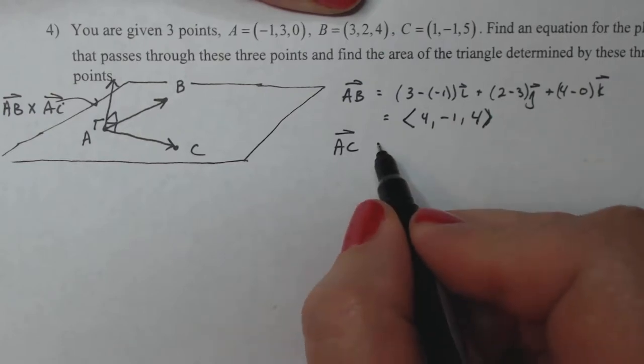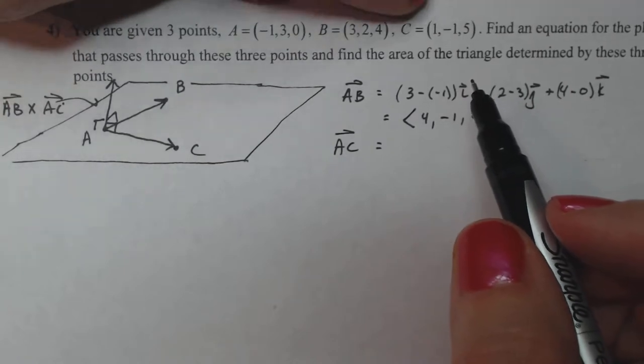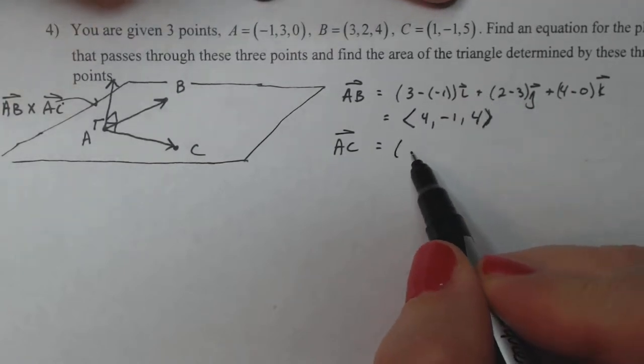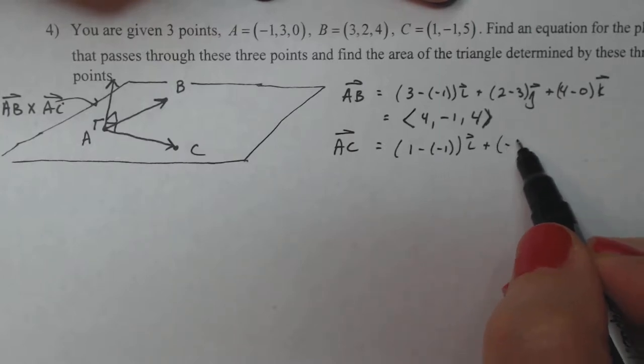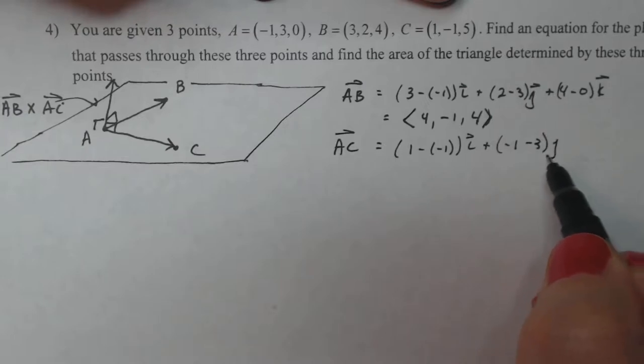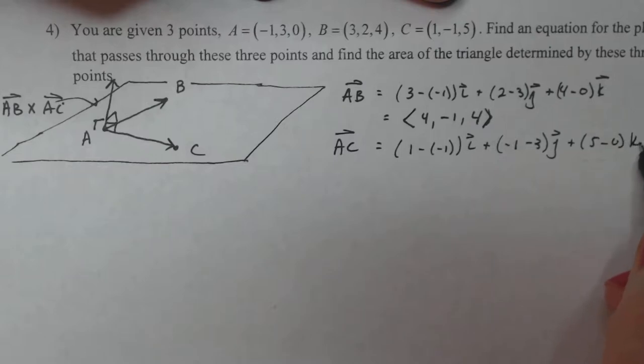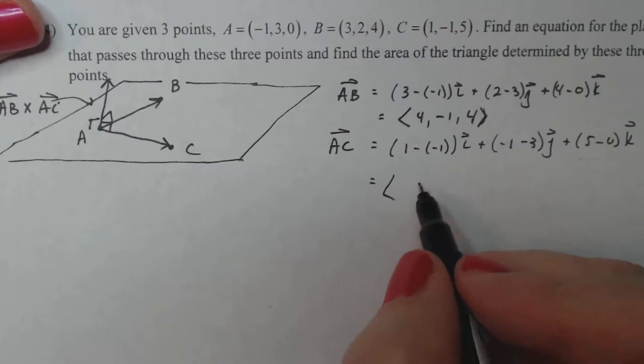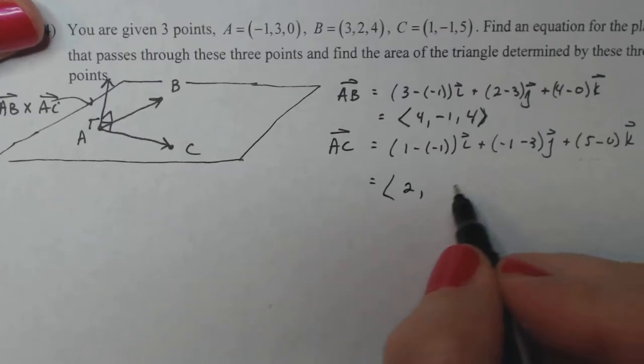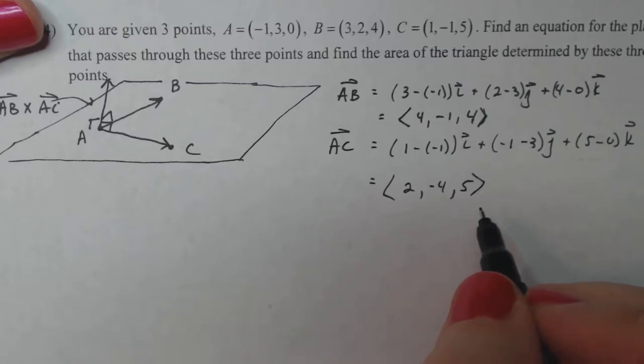Then for AC, C is the two points, so that goes first. So it's gonna be 1 minus negative 1 i plus negative 1 minus 3 j plus 5 minus 0 k. What does that give me? That gives me 2i minus 4j and 5k. Great.